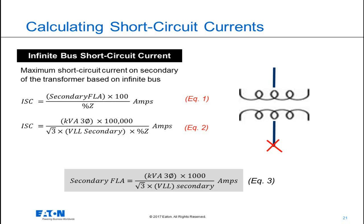The basic equation that we use is the full load amps times 100 over the percent impedance of the transformer. The secondary full load amps calculation equation that you'll use is seen in equation number three. If I combine equation number three here with equation number one, I get equation number two. This is how you calculate the maximum available short-circuit current that you can see on any transformer.